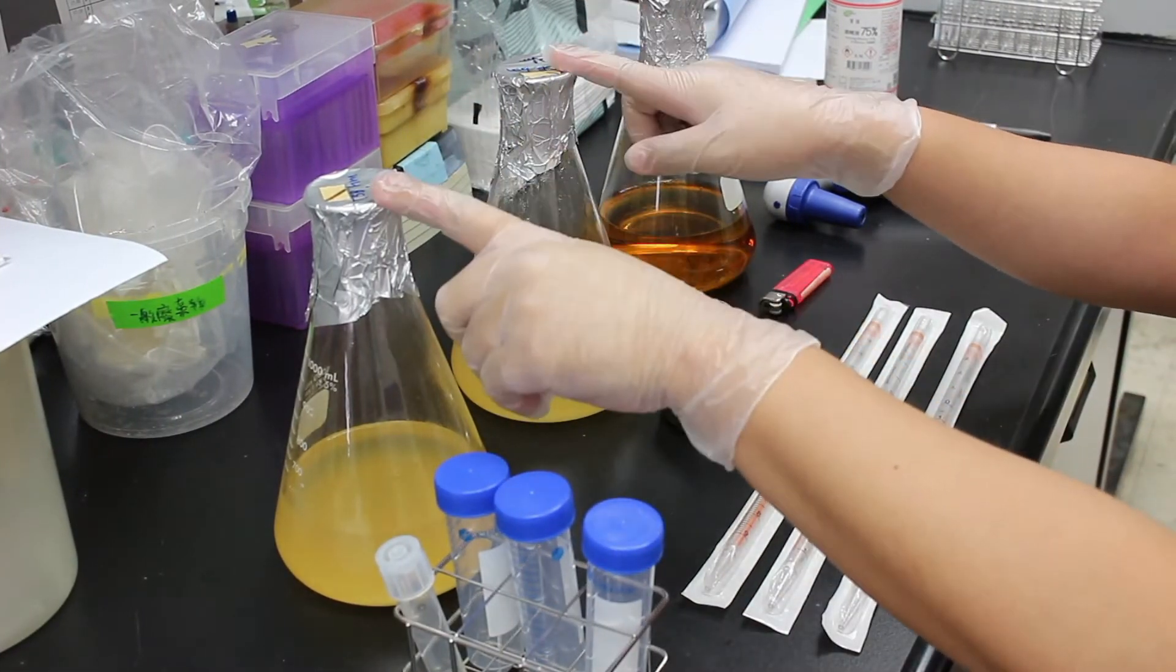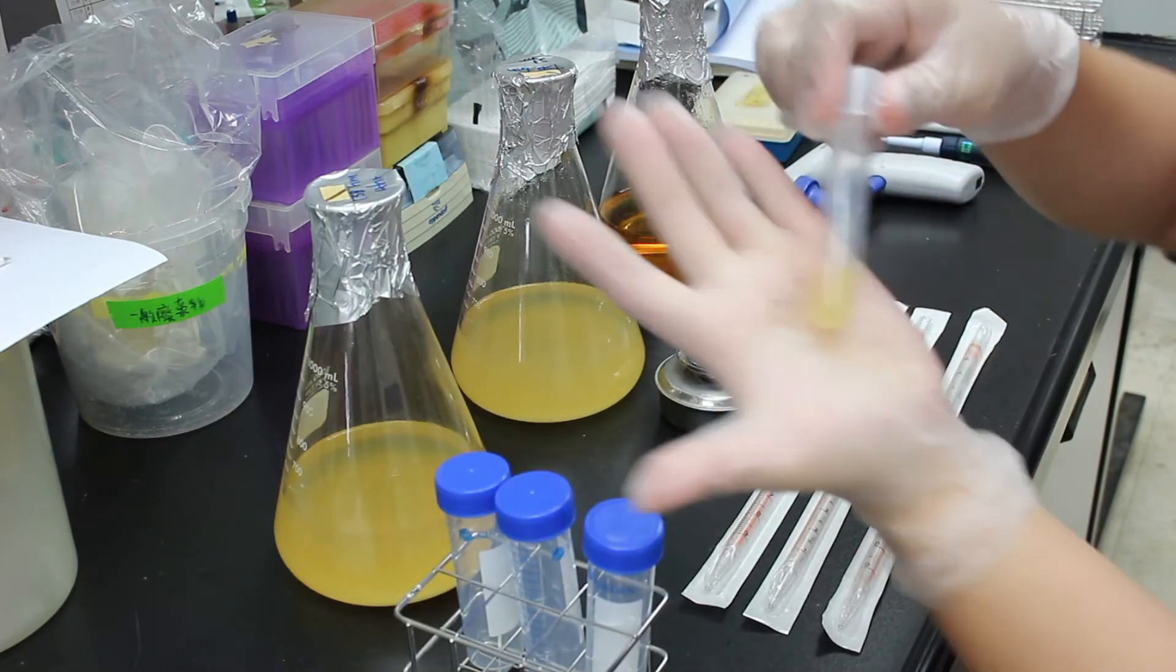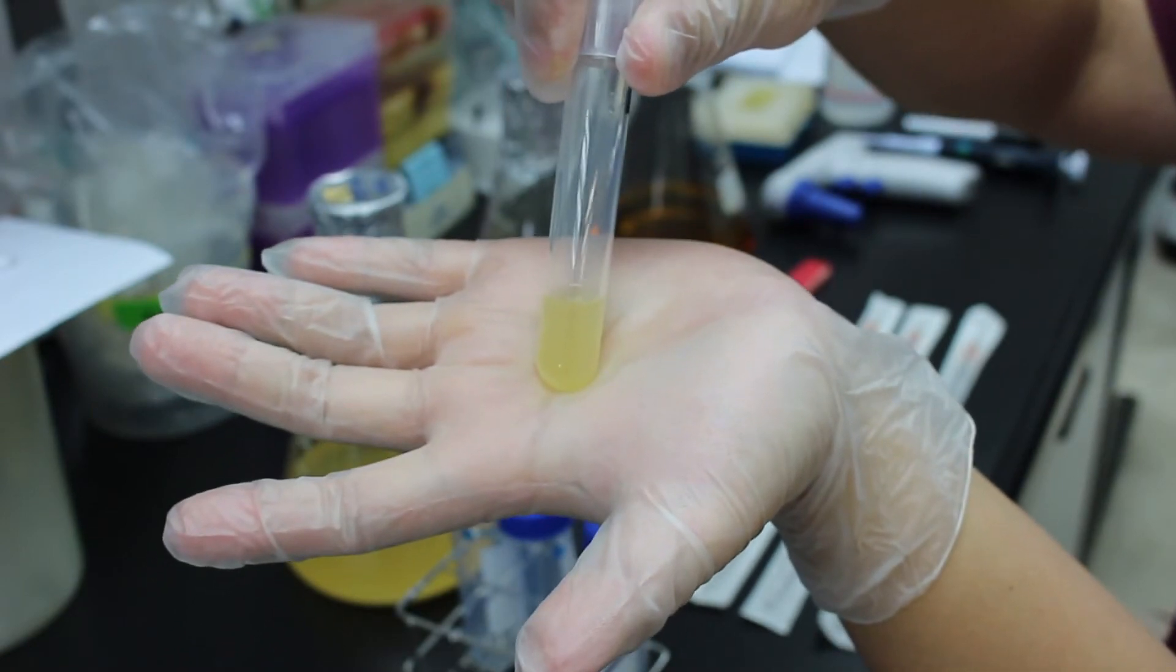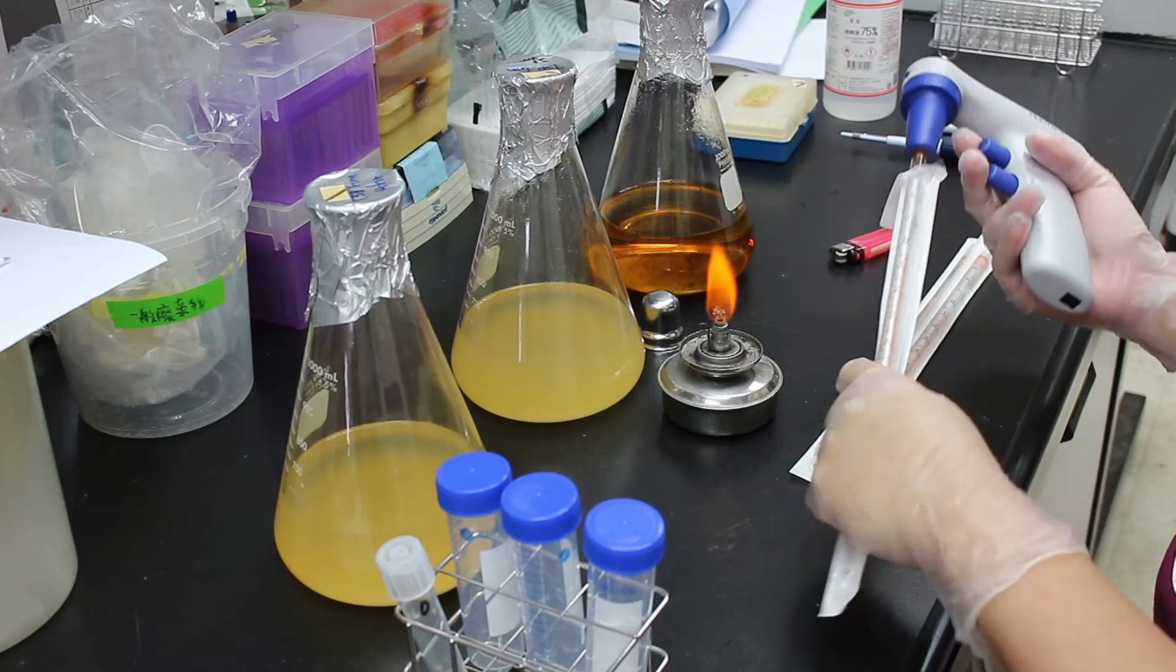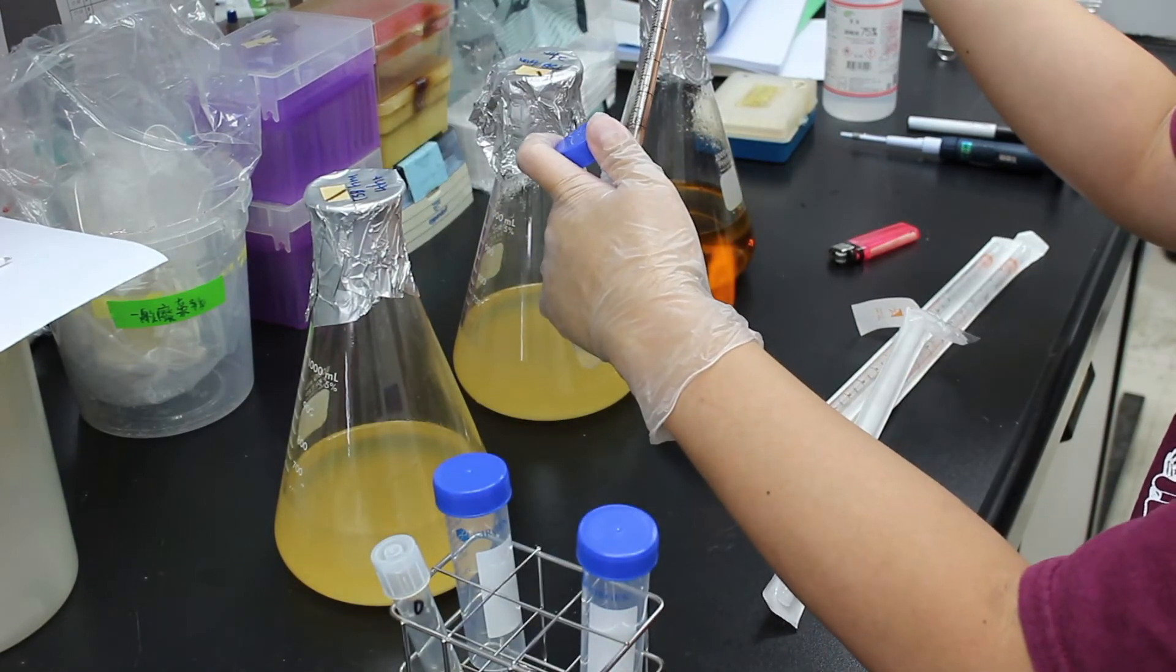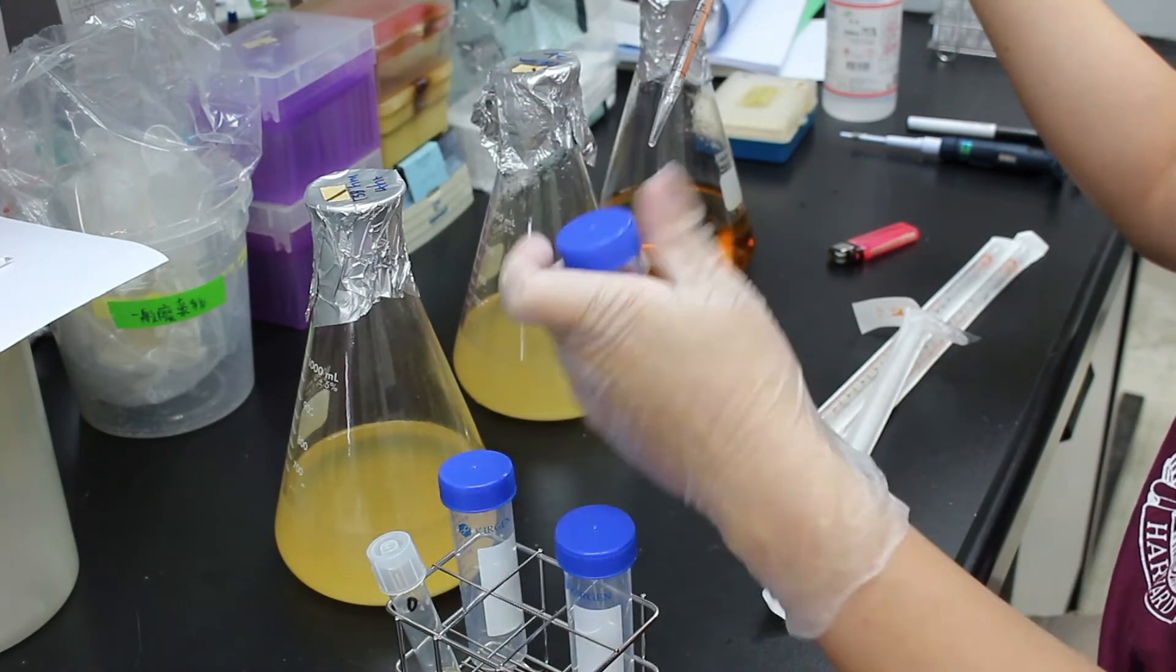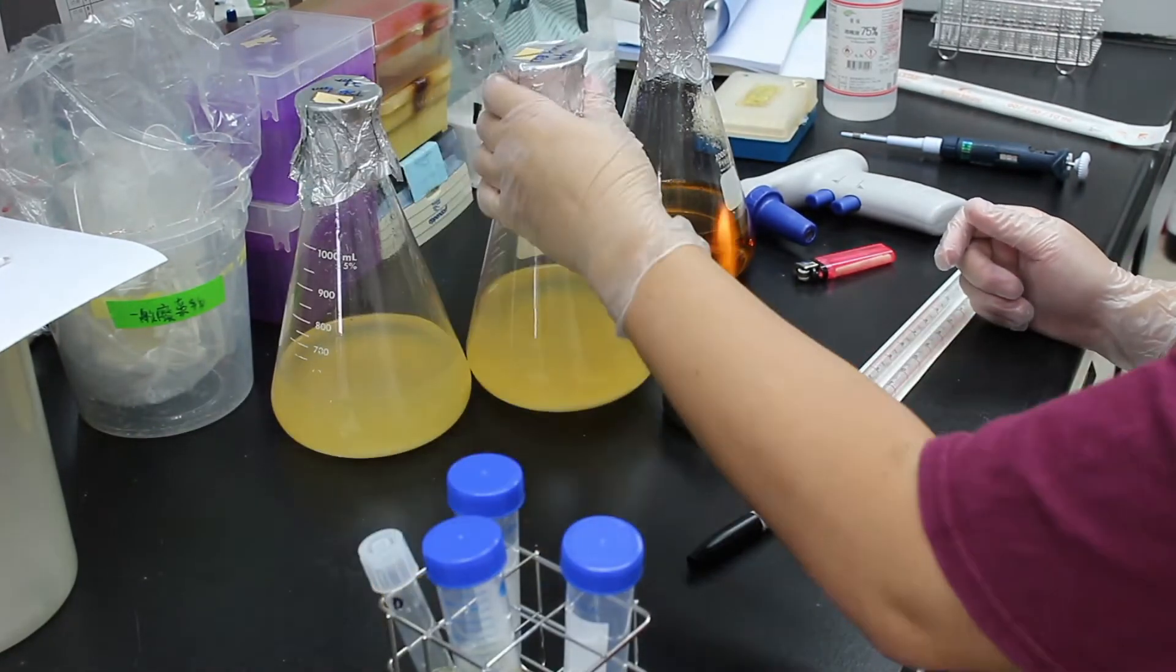Here are my homemade media. Now I want to test how good they are. I have prepared some overnight culture of mixed bacteria and will put them into my homemade medium as well as this commercial TSB. Then I will measure the absorption rate at 600 nm every hour. This will let me know how many bacteria are inside the medium.